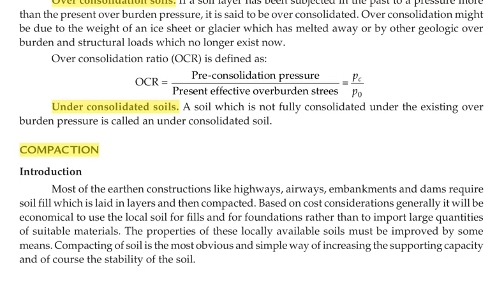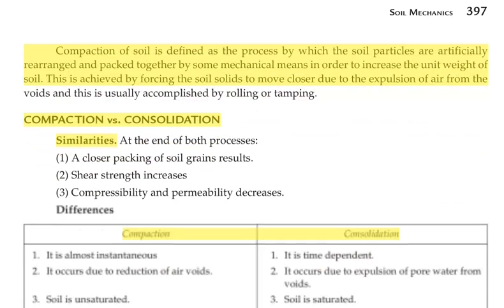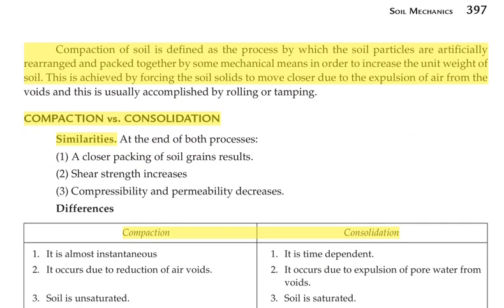In this video we are going to see about compaction. The compaction factor is mainly considered for increasing the bearing capacity and overall stability of the soil. Compaction of soil is defined as the process by which soil particles are artificially rearranged and packed together by mechanical means in order to increase the unit weight of the soil. This is achieved by forcing soil solids closer together due to the expulsion of air from the voids, usually accomplished by rolling or tamping.